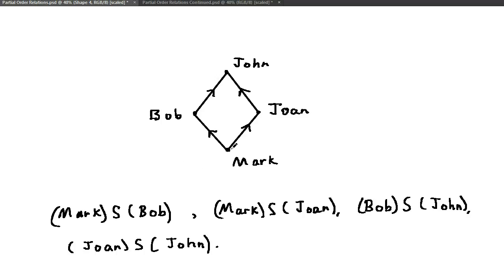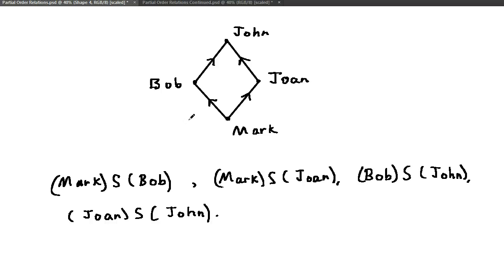Since Mark is shorter than Bob and Bob is shorter than John, Mark is shorter than John, so we also have that Mark S John. We can see that S is transitive.